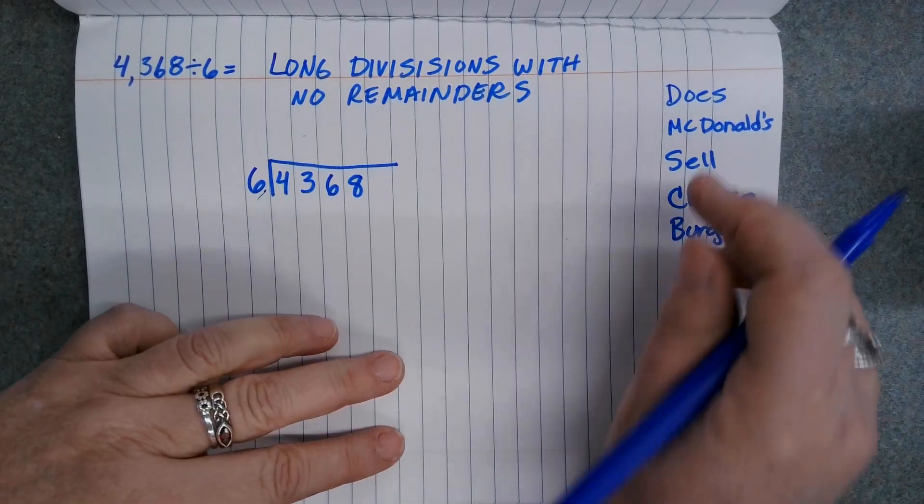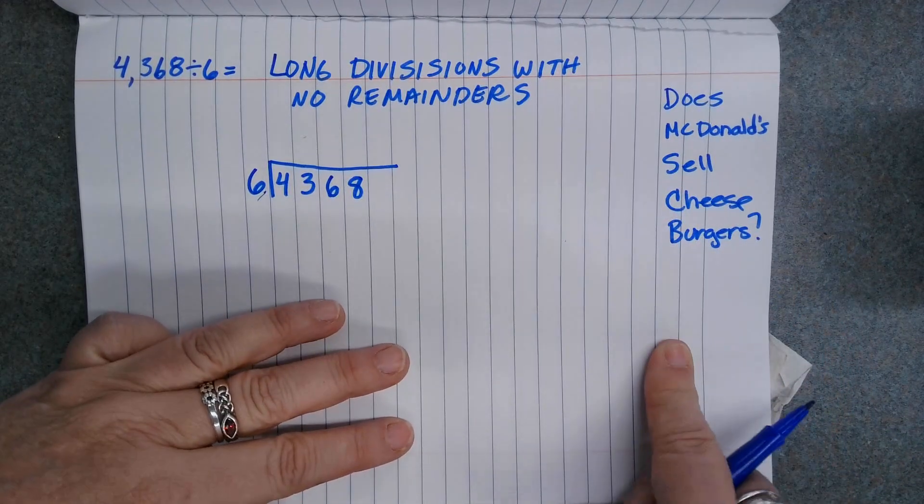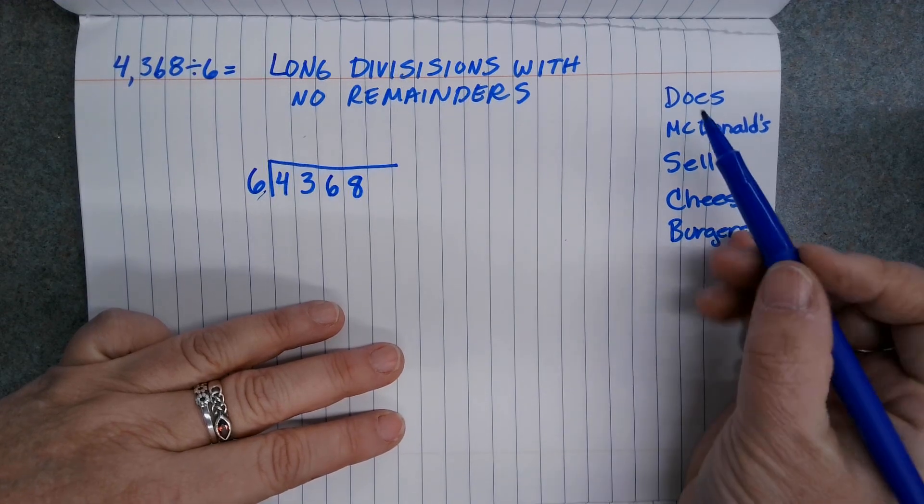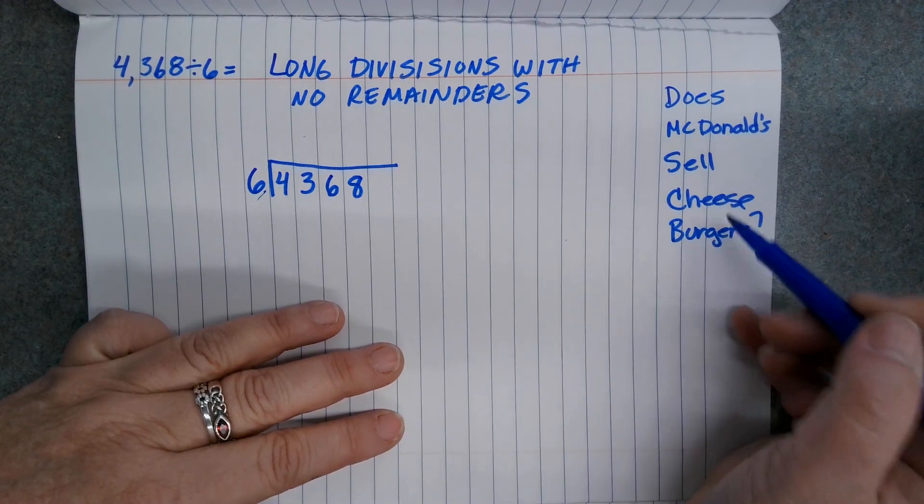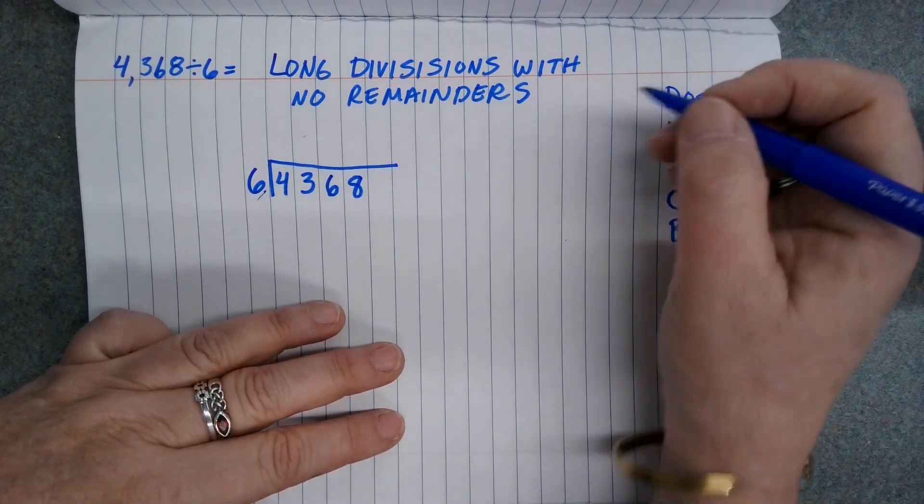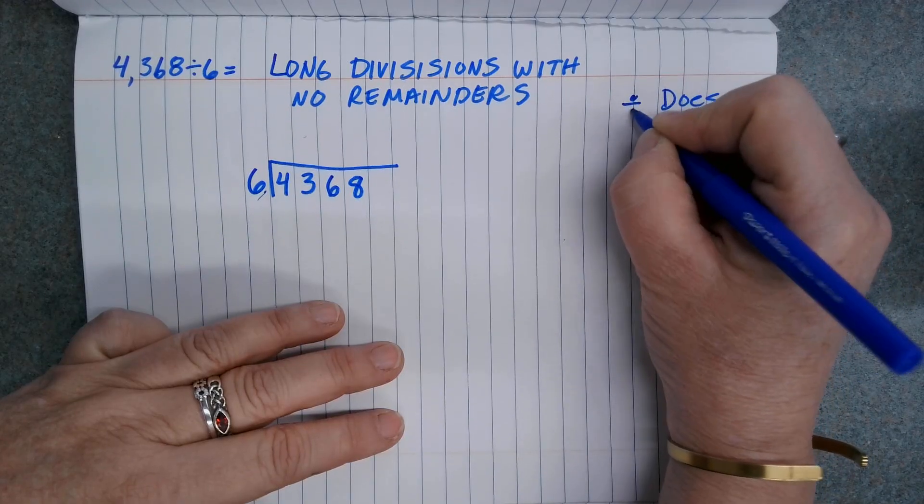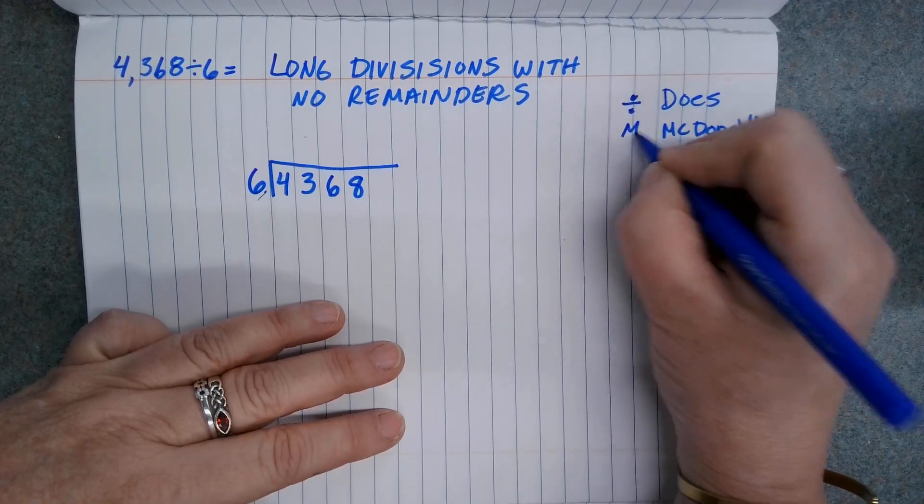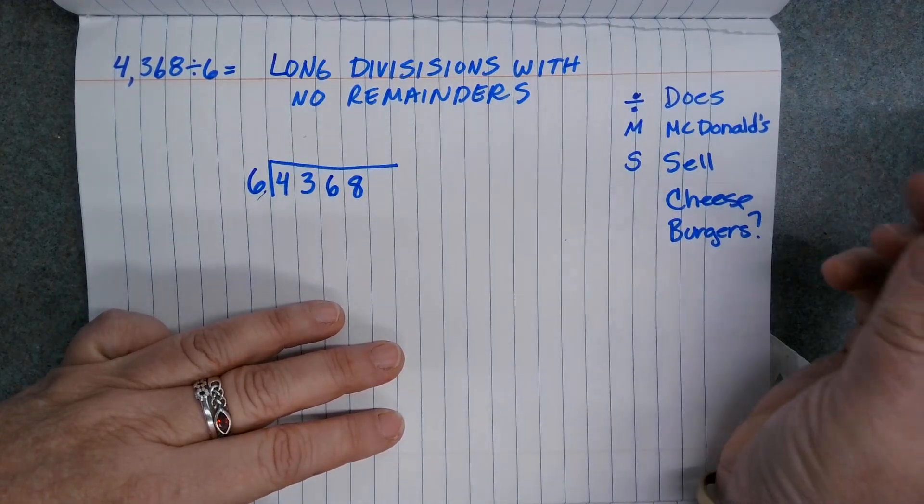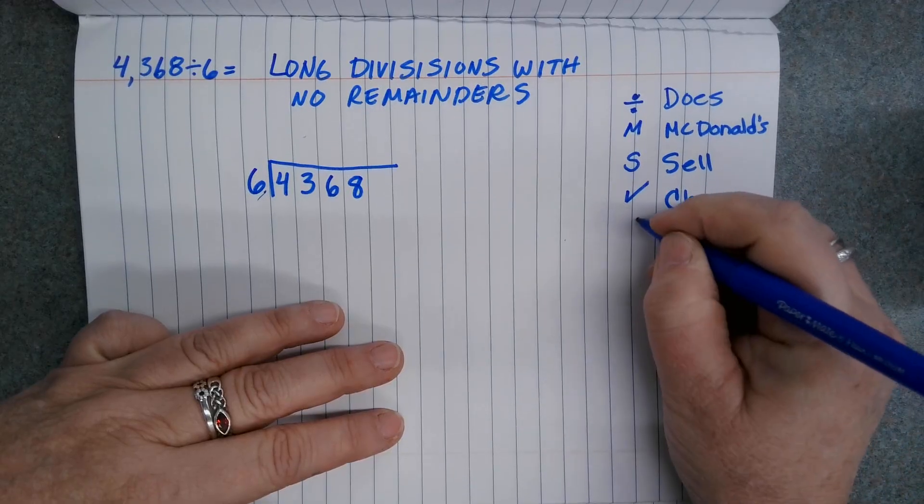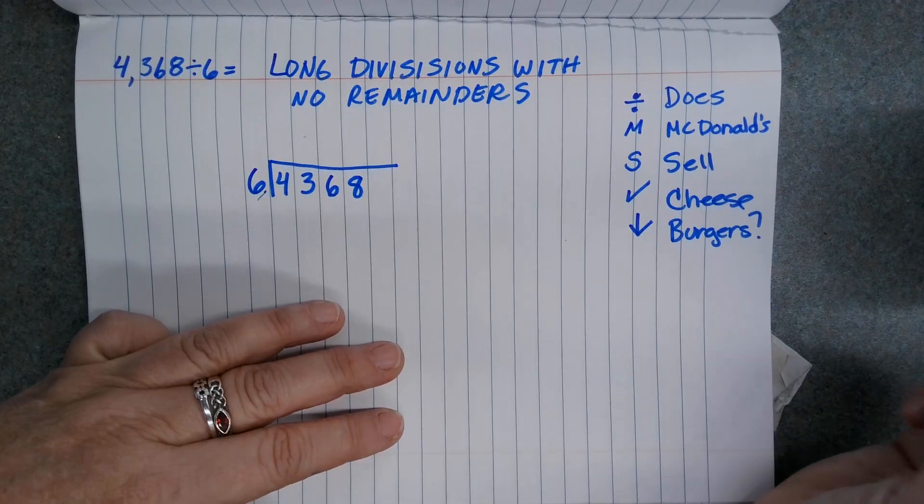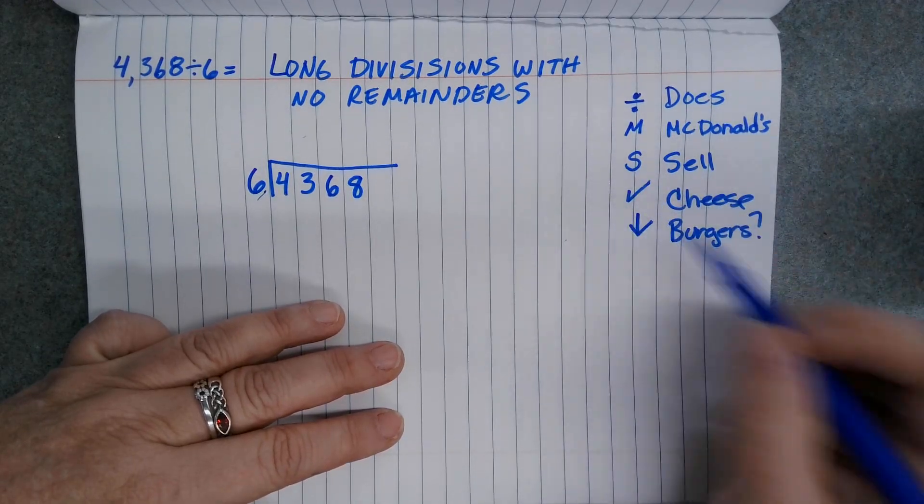The second thing I'm going to do is write down all my steps. I'm going to think of the acronym 'Does McDonald's Sell Cheeseburgers?' which means divide, multiply, subtract, check, and bring down. I told the kids to write this on every single one of their sheets.